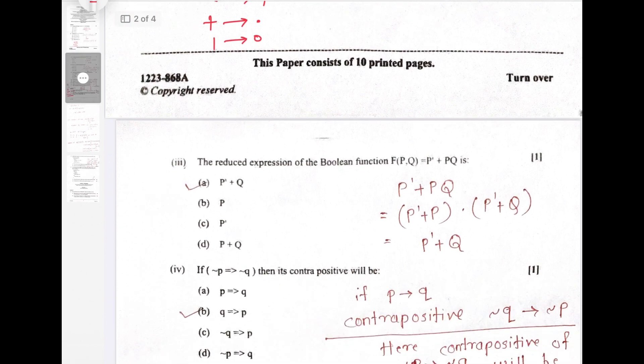Question 3. The reduced expression for the Boolean function F equals P bar plus PQ is what? If I solve it will be P bar plus P dot P bar plus Q. Now P plus P bar is 1. So this remains 1 dot P bar plus Q. That is option A is correct.